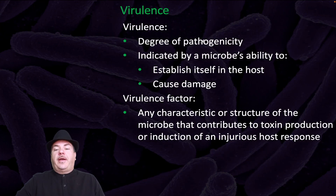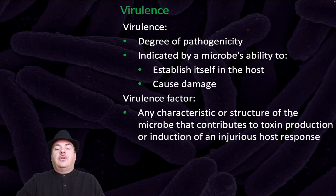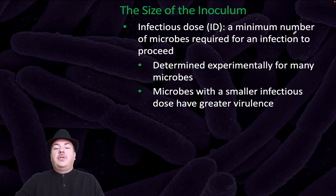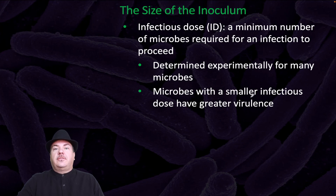Virulence is a degree of pathogenicity, indicated by a microbe's ability to establish itself in the host and cause damage. A virulence factor is any characteristic or structure of the microbe that contributes to toxin production or induction of an injurious host response. Infectious dose is the minimum number of microbes required for an infection to proceed — this is determined experimentally for many microbes. Microbes with a smaller infectious dose have greater virulence.